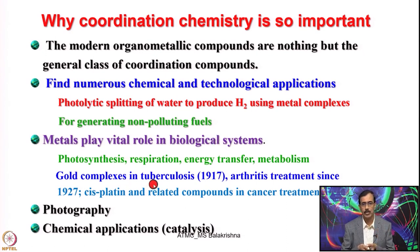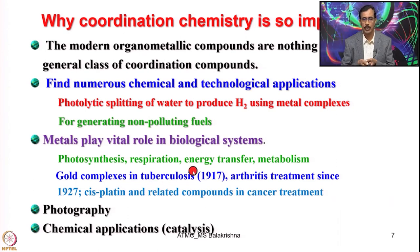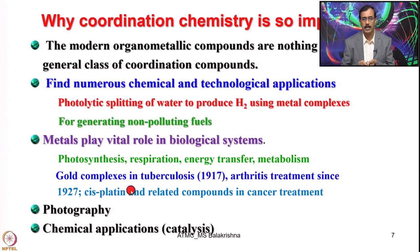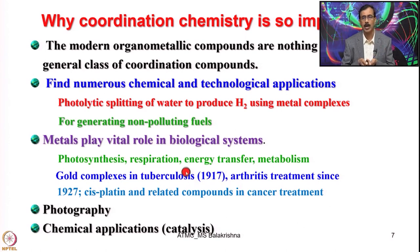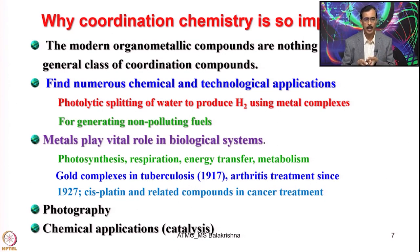Gold complex was used for tuberculosis treatment as early as 1917, and also for arthritis treatment. From 1927 onwards, cisplatin and related compounds are used in cancer treatment chemotherapy. Even now, cisplatin is used for prostate cancer and several platinum derivatives are used in treatment of various cancers.